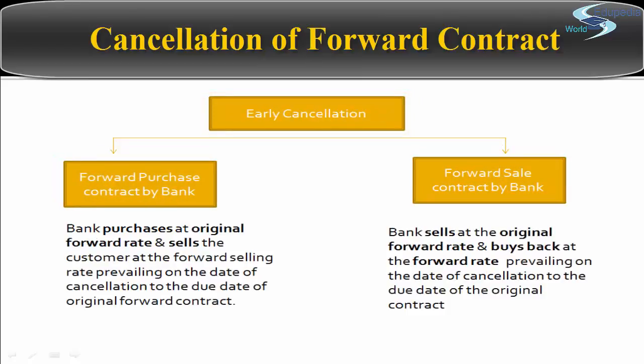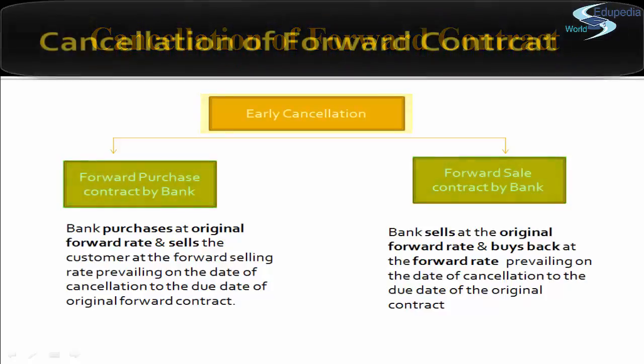The same applies in an early cancellation, but in an early cancellation the bank has another obligation at the specified rate. For a forward purchase contract by the bank, the bank purchases at the original forward rate but sells to the customer at the forward selling rate prevailing on the date of cancellation. Similarly for a forward sale contract, the bank sells at the original forward rate but buys back at the forward rate prevailing on the date of cancellation through to the due date of the original contract.